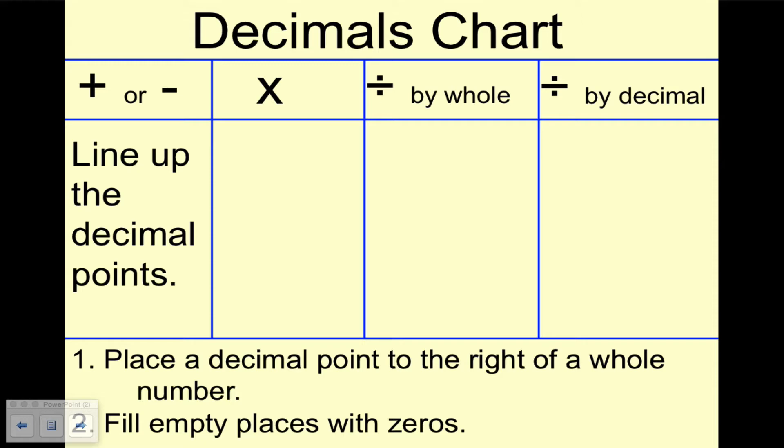So if you have a number with no decimal point, you put the decimal to the right of it. Also you can fill in any empty places with zeros as placeholders.